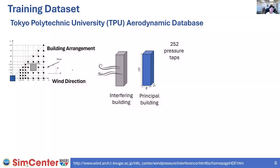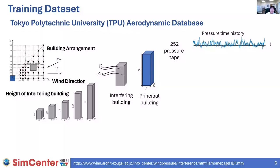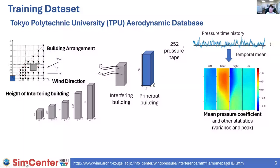They also repeated these experiments for different wind directions and changed the height of the interfering building to investigate how height affects the pressure distribution. In terms of experimental outcome, they measured pressure time history at each pressure tap location. We are often interested not in the entire time history, but in average statistics like the mean value, peak value, or variance. If we are interested in average pressure, we obtain the average time history for each pressure tap location and can visualize the result, showing how mean pressure is distributed across the building surface.